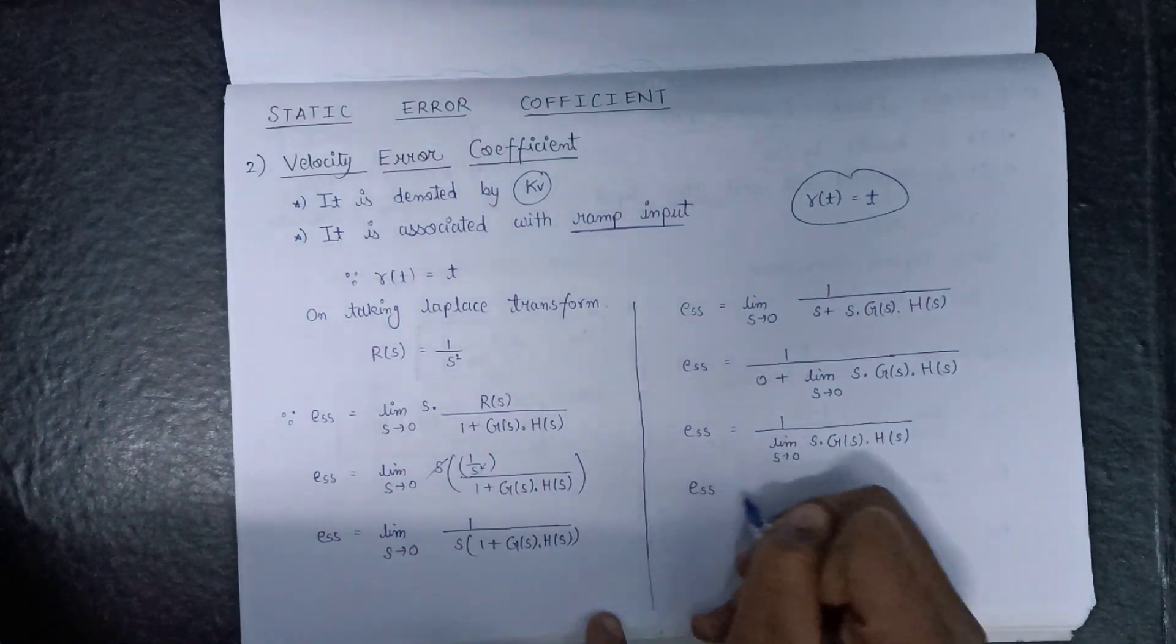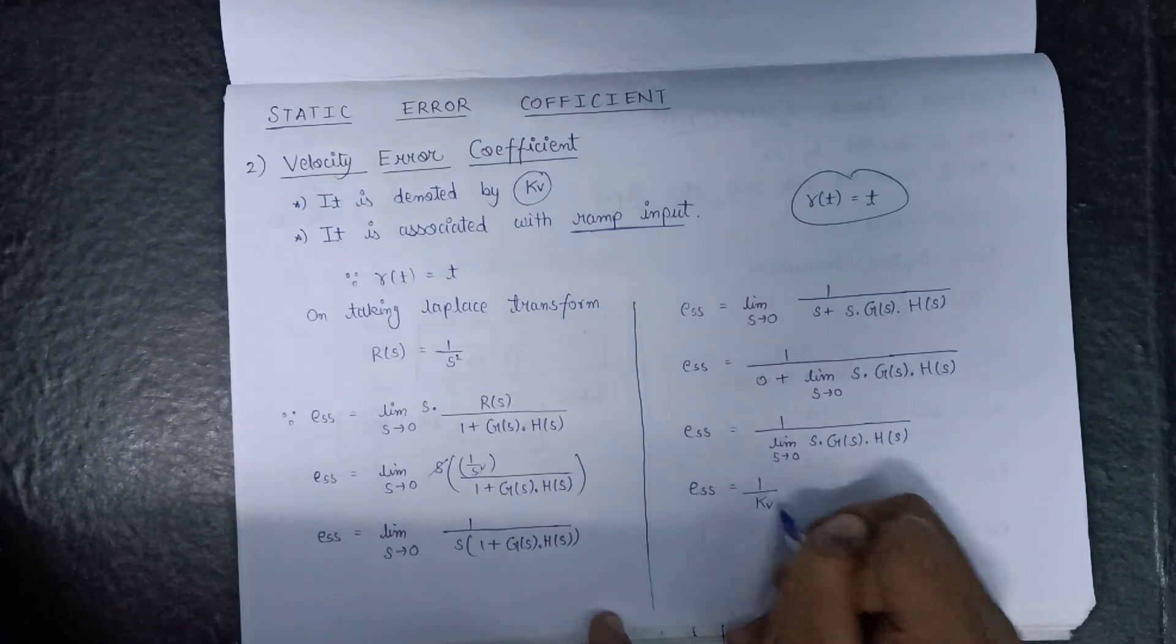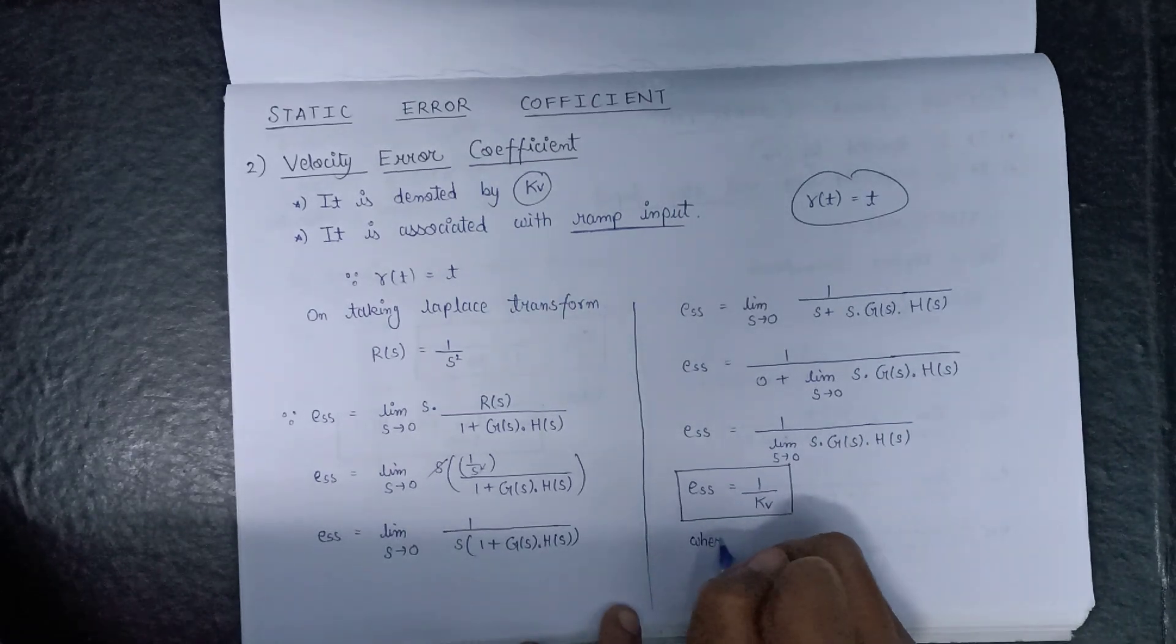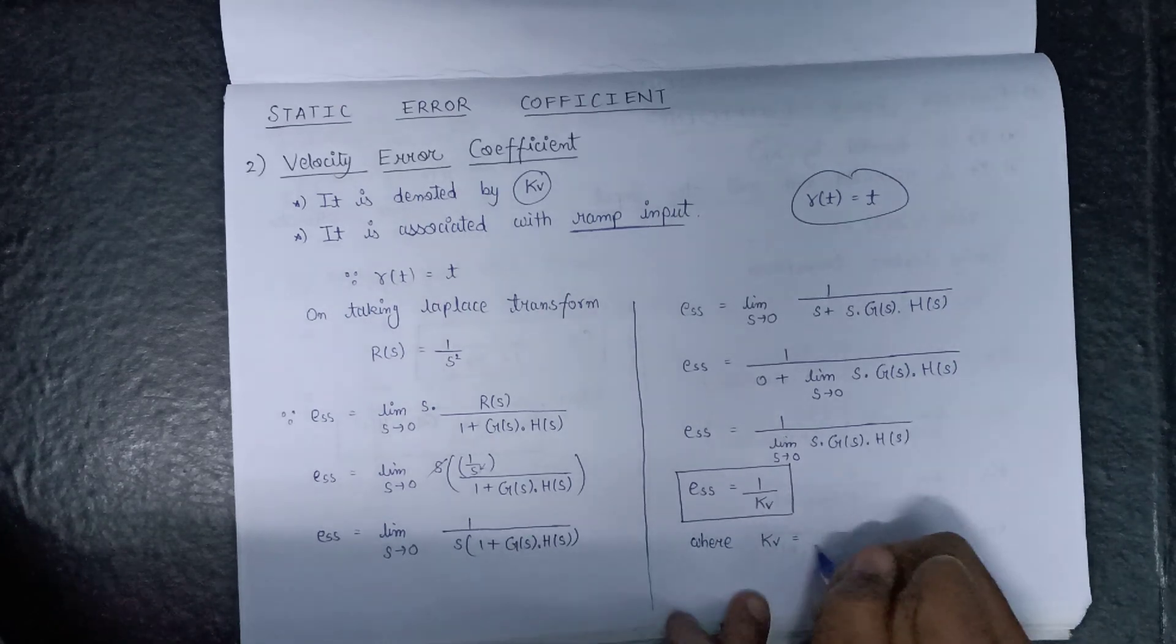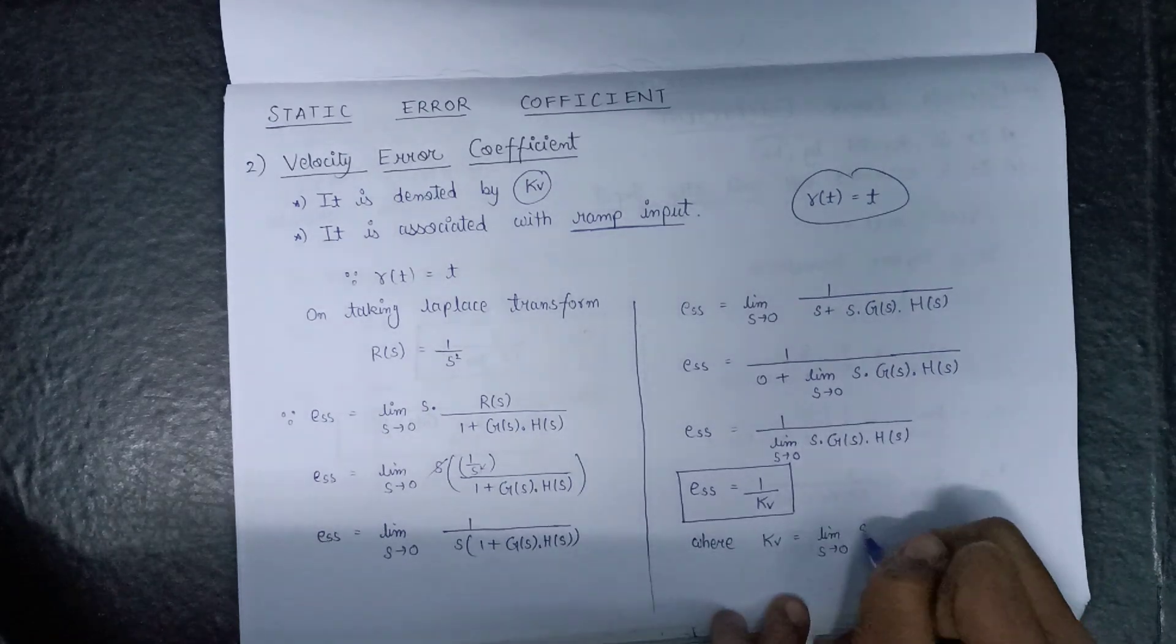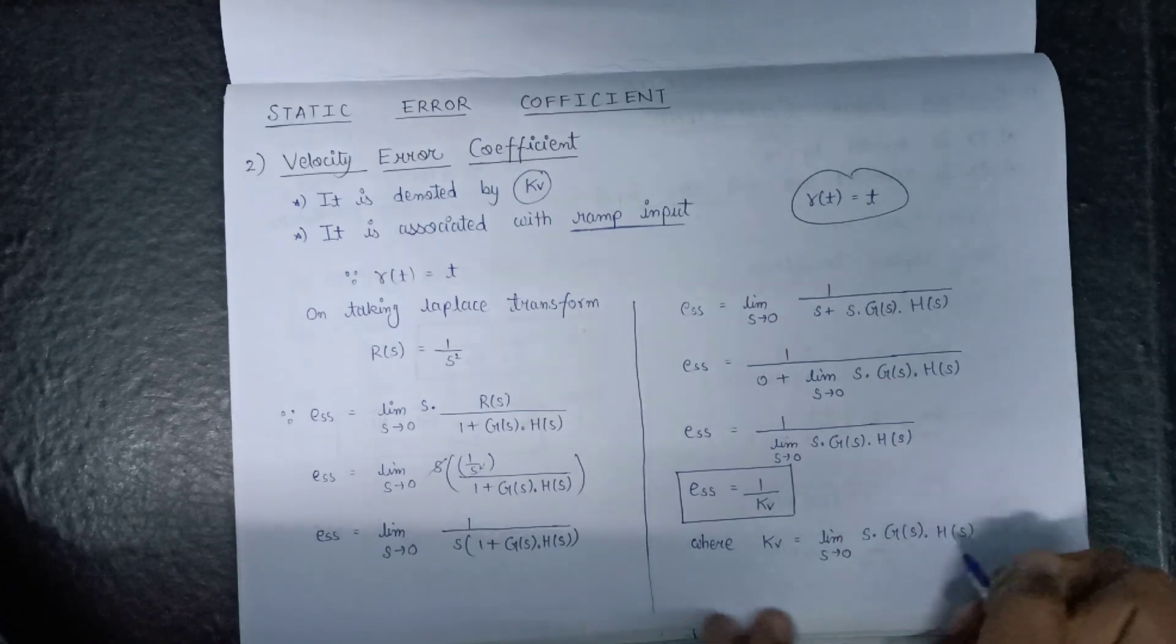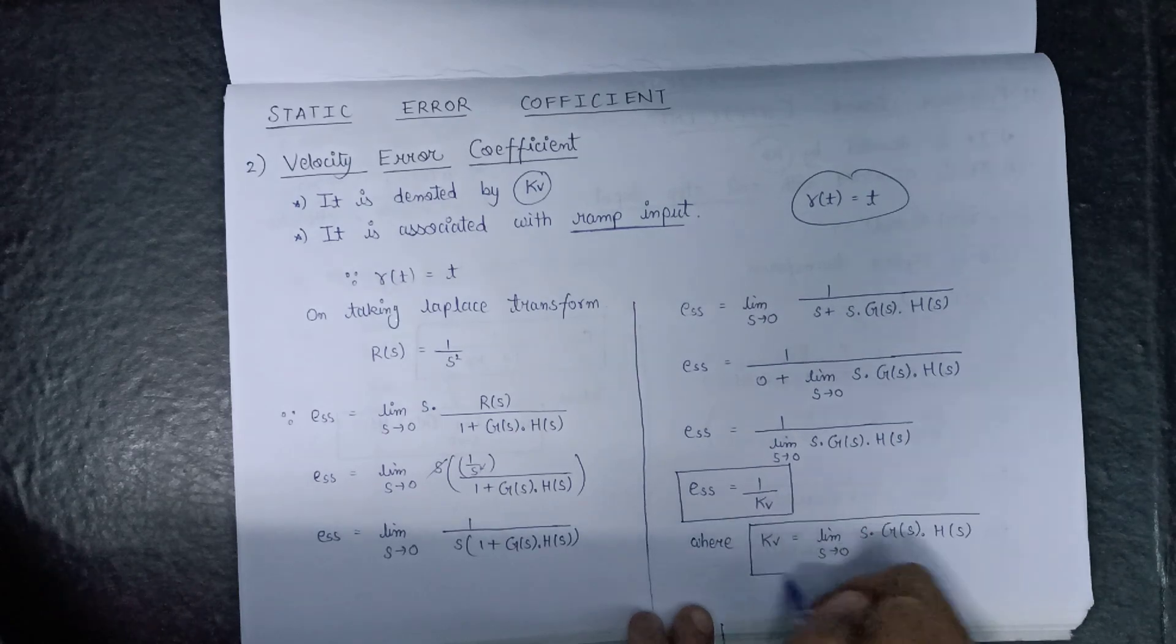In terms of velocity error coefficient, E(s) can be written as 1 over Kv, where Kv is the velocity error coefficient. Kv is nothing but limit s tends to 0, s into G(s) into H(s). This is the final expression of velocity error coefficient. Thank you.